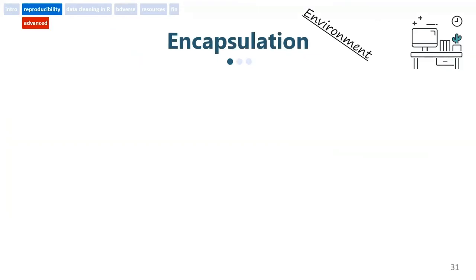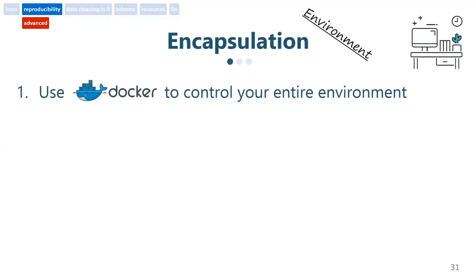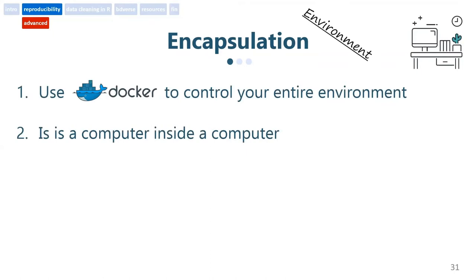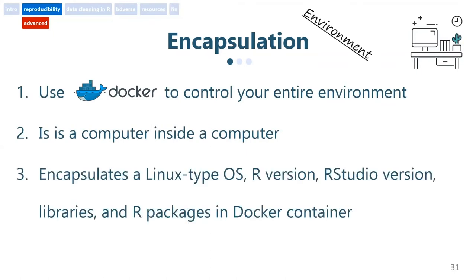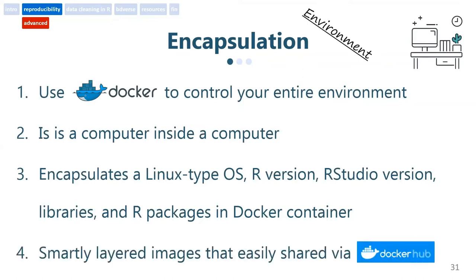The third option is a bit more demanding. It requires the download and installation of Docker, which is able to control the entire environment. It's basically a computer inside a computer that is able to encapsulate a specific Linux-type operating system, a specific R version, a specific RStudio version, specific Linux libraries, and specific R packages — all in one container that is easily deployable. This image is very smartly built and you can combine and share many different images.